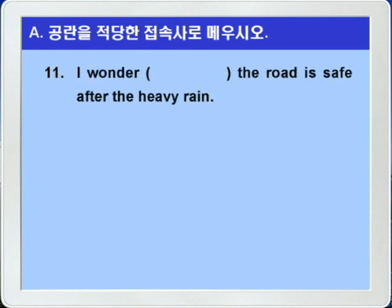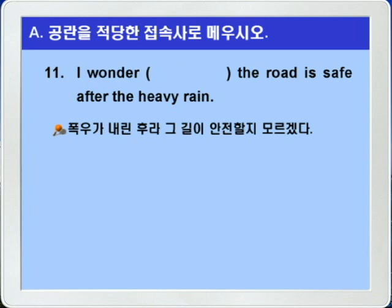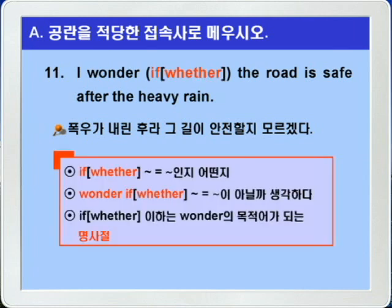11번입니다. I wonder blank the road is safe after the heavy rain. heavy rain은 폭우라는 뜻이니까, '폭우가 내린 후 그 길이 안전할지 어떨지 모르겠다'는 의미가 됩니다. '뭐뭐인지 어떤지' 의미니까 'if' 혹은 'whether'가 들어가면 되겠습니다. 이 문장에서 if/whether 이하는 타동사 wonder의 목적어가 되는 명사절로 3형식 문장이 되겠습니다. 정답을 확인해 보죠.